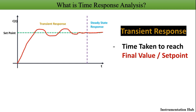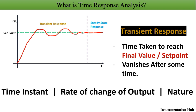One important thing is that transient response vanishes after some time. Transient response also provides information about the time instant when the system starts responding to the applied input, the rate of change of output which gives the speed of the system, and the nature of the output. Compare these terms with the given figure and you will understand it clearly.